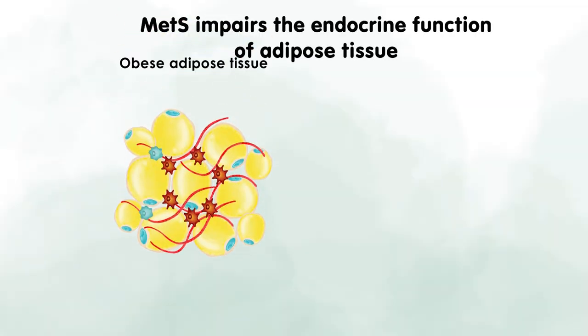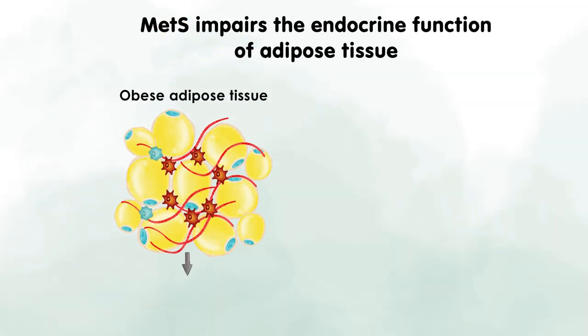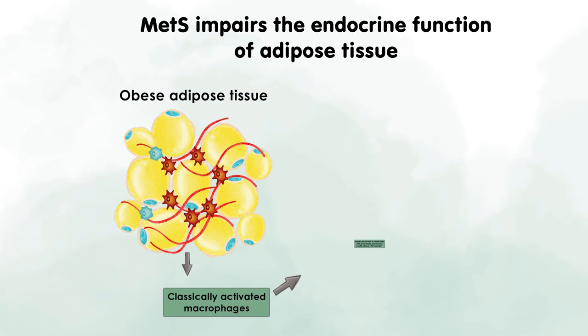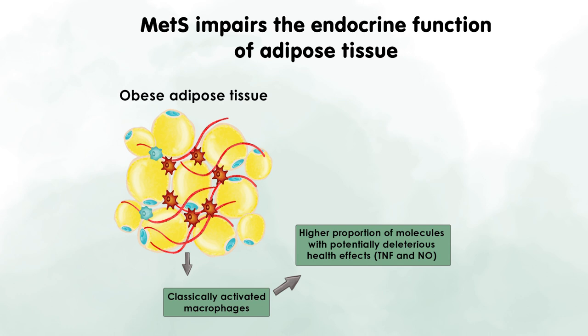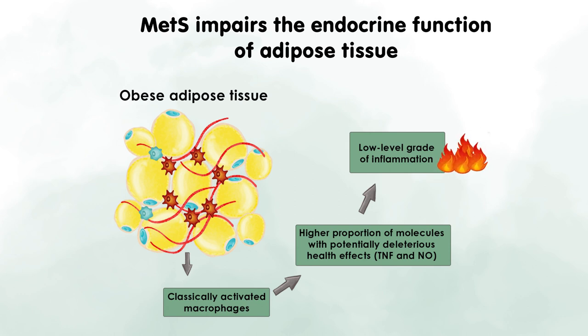In the case of obesity and the metabolic syndrome, this important endocrine function of the adipose tissue can be severely impaired. Additionally, classically activated macrophages of obese adipose tissue produce a higher proportion of molecules with potentially deleterious health effects, such as tumor necrosis factor and nitric oxide. These molecules are called cytokines and they can trigger a low grade of inflammation — a risk factor for the metabolic syndrome, which will be described in detail in the next video.